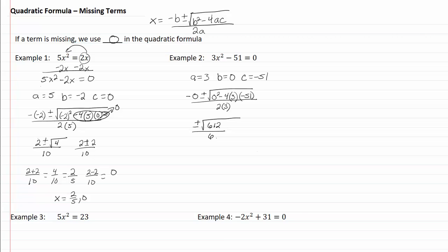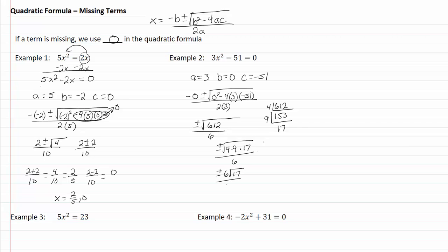I'll try to simplify the square root of 612. It's divisible by 4, giving 153, and 153 is divisible by 9, leaving 17. So I've got plus or minus the square root of 4 times 9 times 17, all over 6. The square root of 4 times 9 is the square root of 36, which is 6. So we get plus or minus 6 root 17 over 6, which reduces to plus or minus the square root of 17.